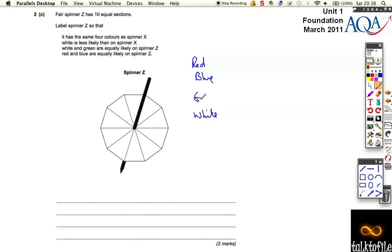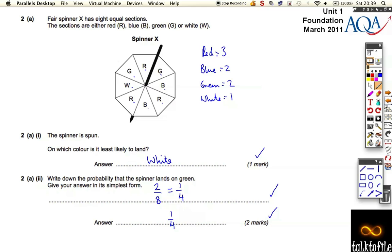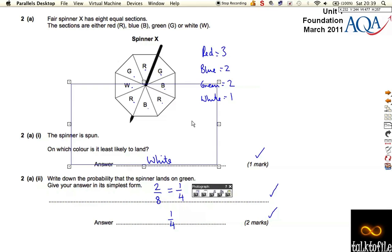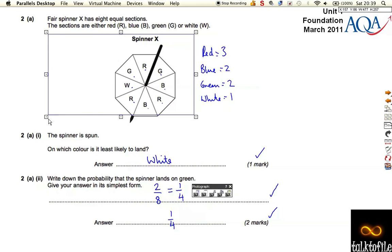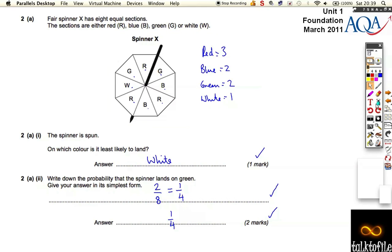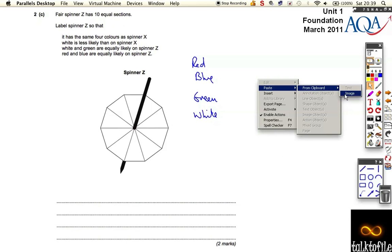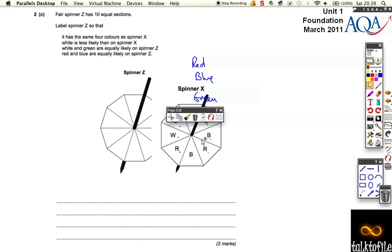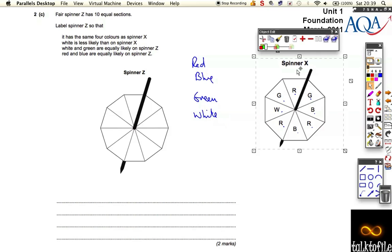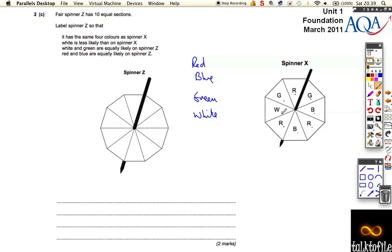Red, blue, green and white. It says white is less likely to land on spinner X. Well, if we just flip back to spinner X, well, why don't we just take a quick picture and might make our life a little bit easier. And then let's just put this spinner over here so we can use it. Okay? So we've got spinner X. So there was only one white here, wasn't there?